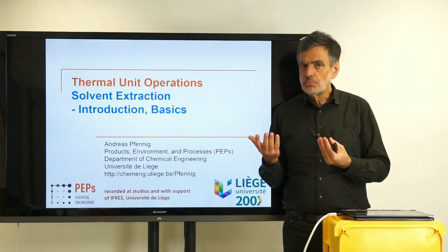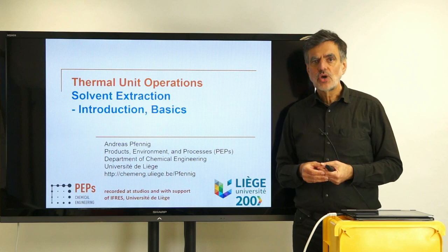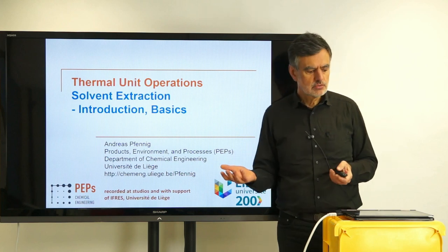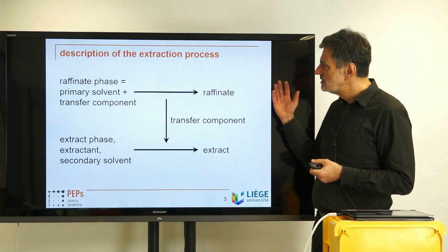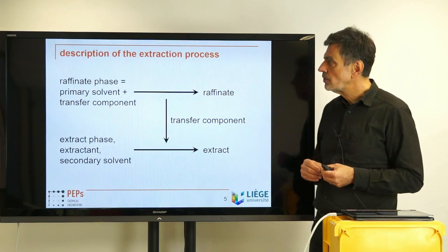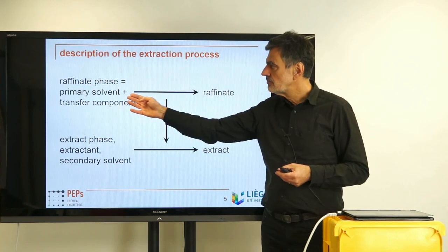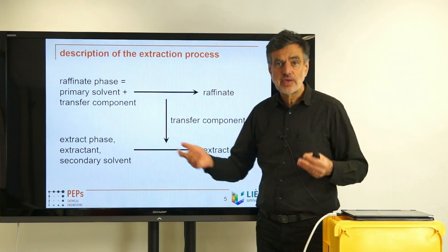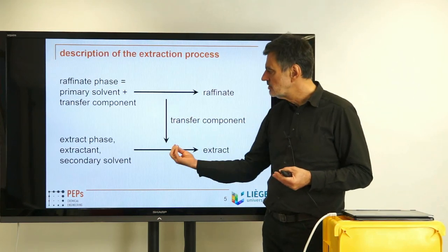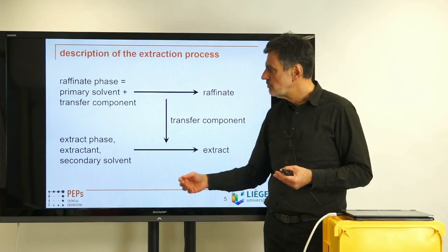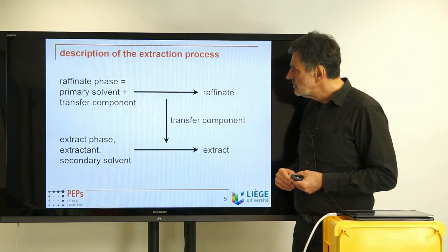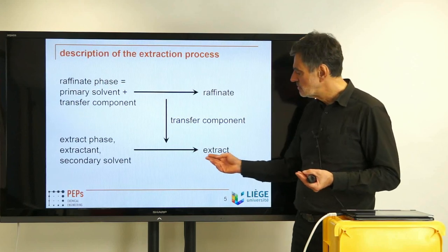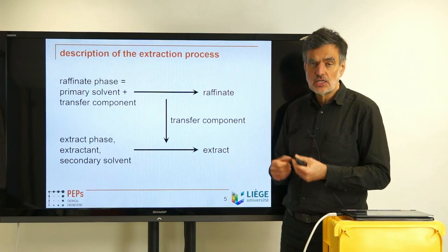We want to remove some component from the so-called primary solvent, from the feed phase, either because it is detrimental for further downstream processes or because it is our product. We start out with a raffinate phase which consists of a primary solvent and a transfer component. To that phase we add a secondary solvent — an extract phase or extractant. That pulls the transfer component from the primary solvent into the secondary solvent. After the process we wind up with the so-called raffinate and the extract.